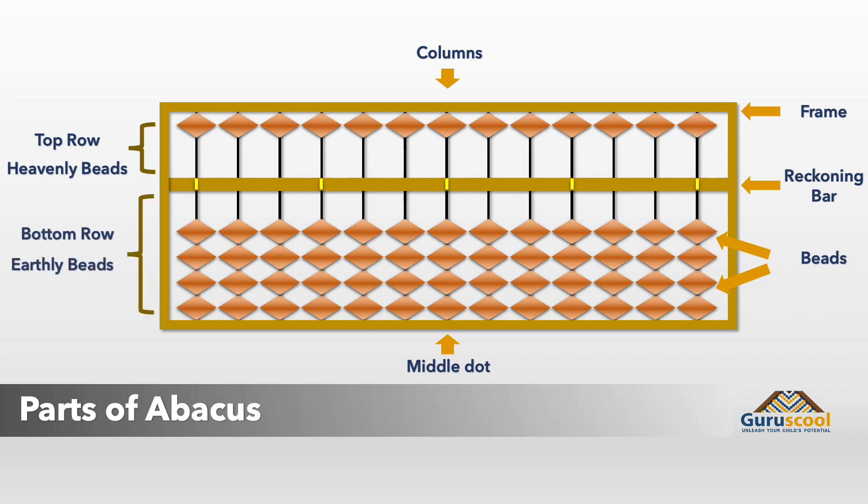The top row has one bead in each column. It has a value of five in the middle dot. The columns on the left of the middle dot represent the fifties, five hundreds, and so on.